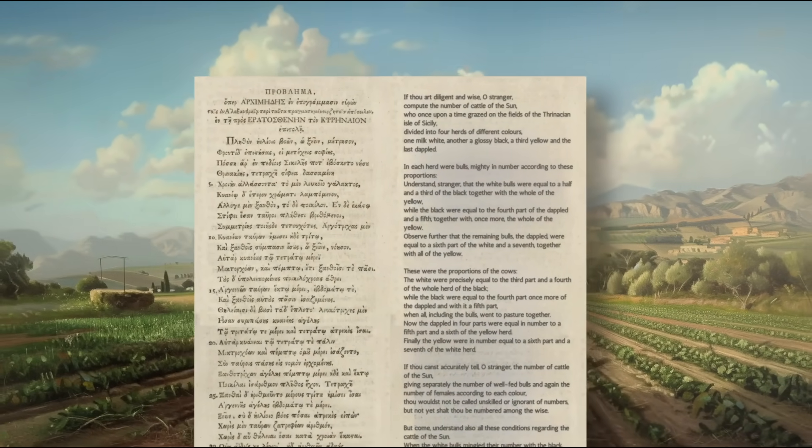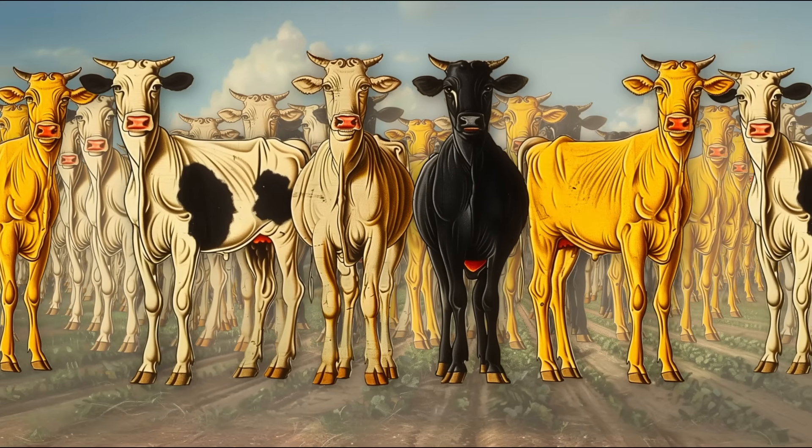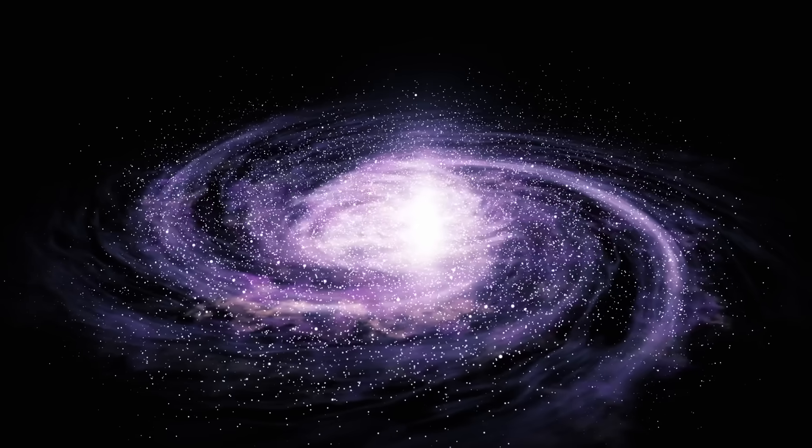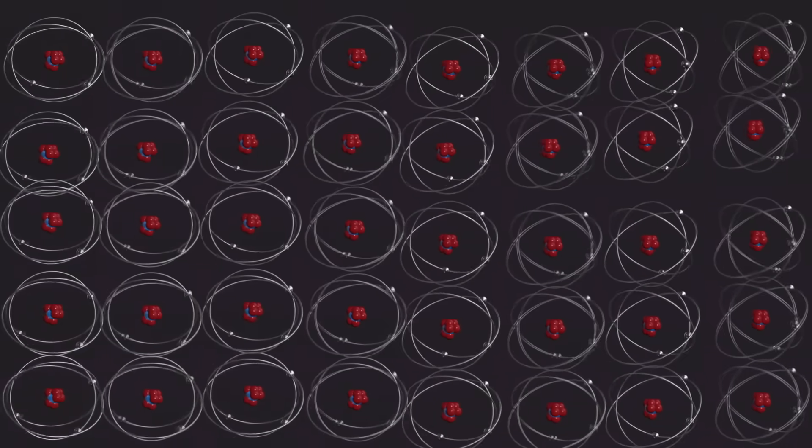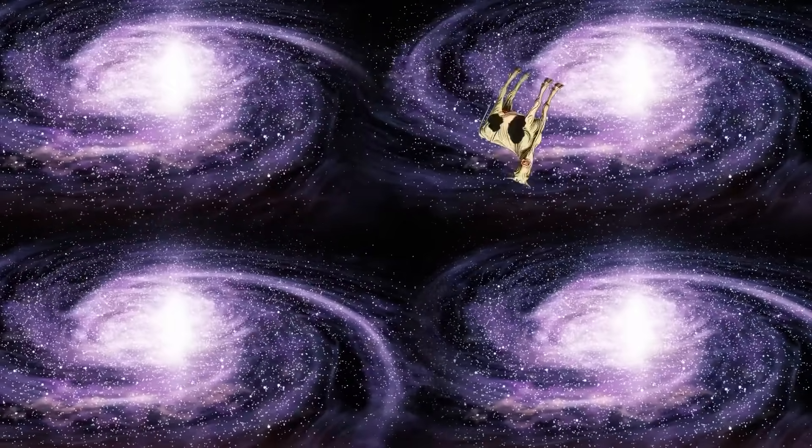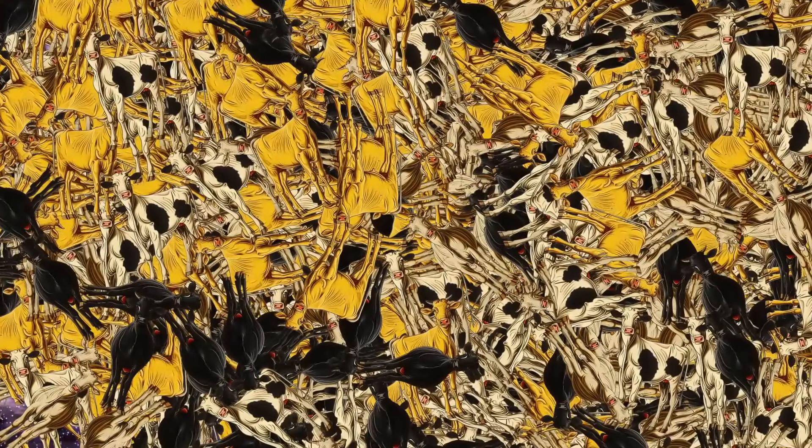This math problem is about counting the number of cattle in a herd. It took 2200 years to solve, and the number of cattle in the final answer is so big that if you take all the atoms in the known universe and turn each of them into their own universes, there would be more cows than all the atoms in all these universes combined. So what was this problem, and why did it take so long to solve?